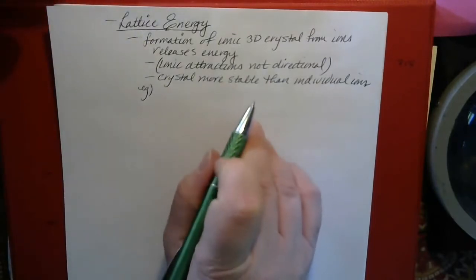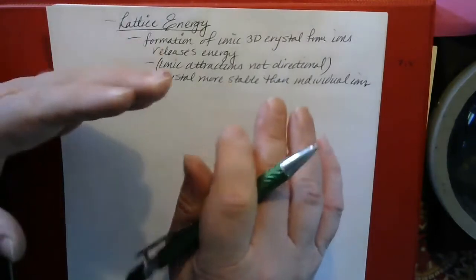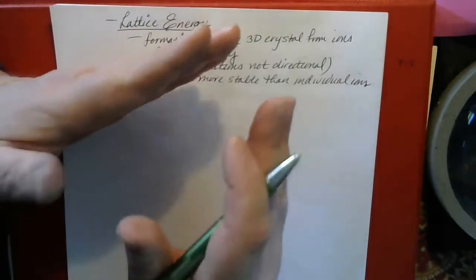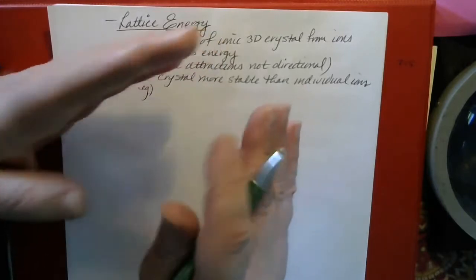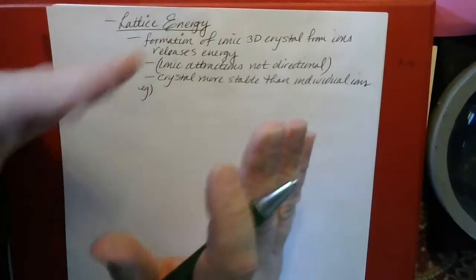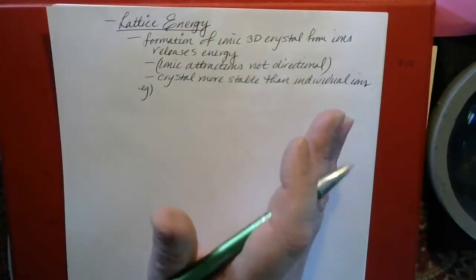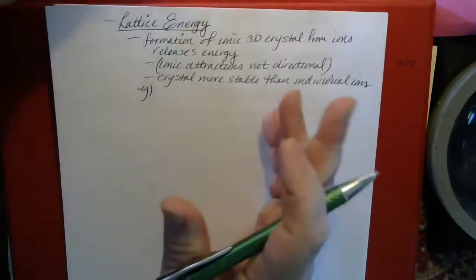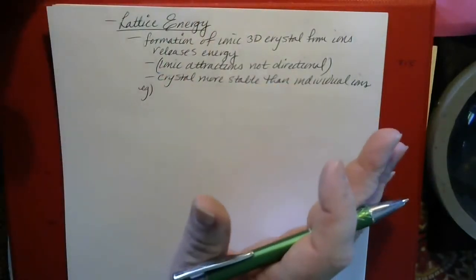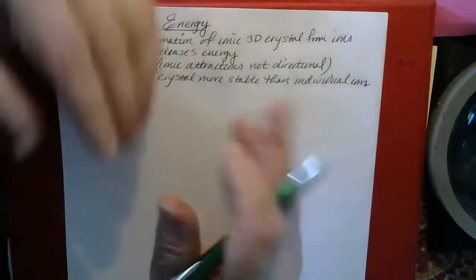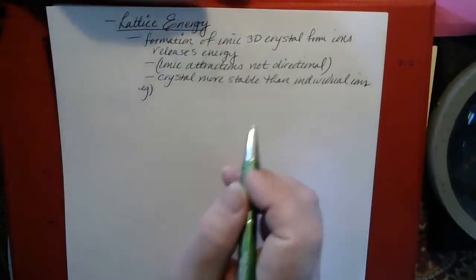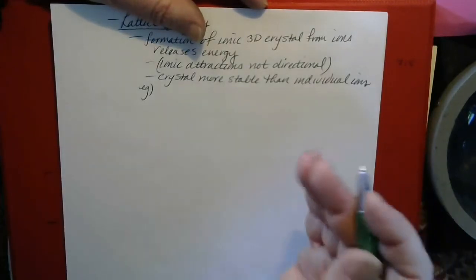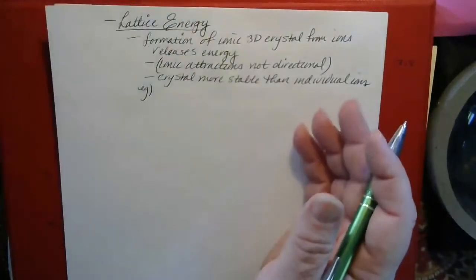When a covalent bond forms, it's very directional, meaning that a covalent bond only consists of two atoms, and for there to be a bond between them, those two atoms have to share valence electrons that are basically housed between the two nuclei. Ionic attractions are non-directional — the electrostatic attraction between positive and negative ions radiates out in all three dimensions. So a positive ion will be attracted to a negative ion to the right, to the left, in front, in back, above, and below.